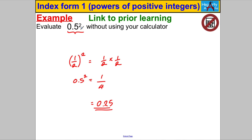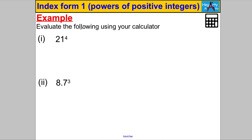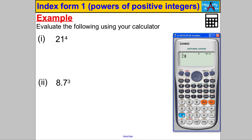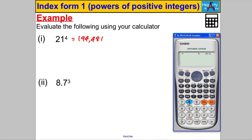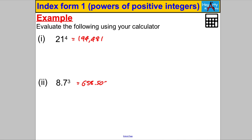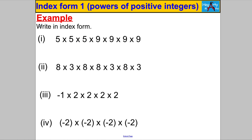Evaluate the following using your calculator — sometimes the numbers are big or decimals and we're not expected to work them out mentally. Type in 21 to the power of 4 and you get 194,481. And 8.7 to the power of 3 gives the answer 658.503.